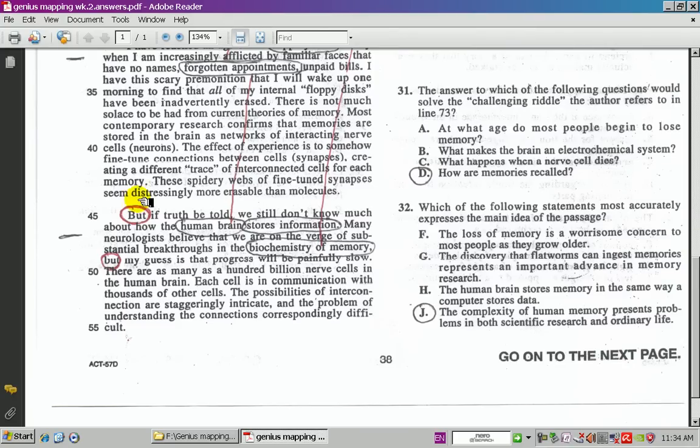Moving on to the next paragraph, we start off with a flip-flopper, which is a word like but, yet, or however, which means we're going to switch directions. We'll go from positive to negative, to negative to positive, and so forth. Now we start off with, but, if the truth be told, we still wouldn't know much about how the human brain stores information. So storing information has something to do with memory. We're not sure what's going on here, so we're going to put a negative symbol next to that. Also, if you look over here, we're going to switch directions here. We circle the word but, and then you come down over here and you see biochemistry of memory and storing information, so you know we definitely are on the right topic.